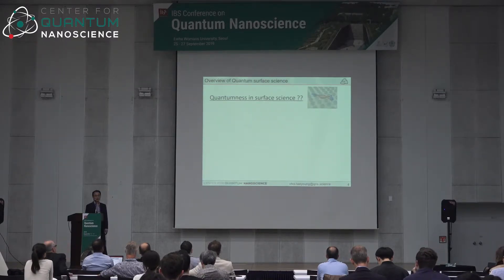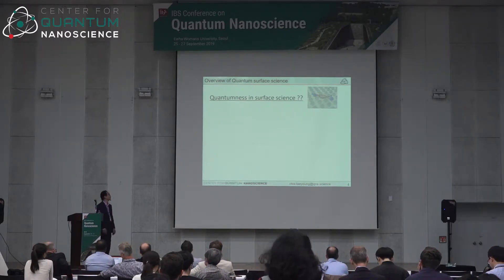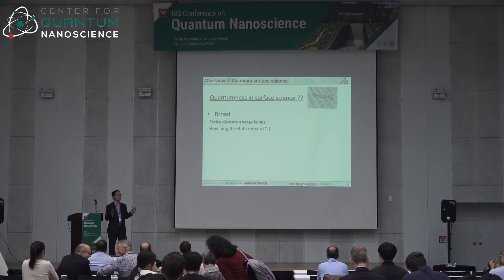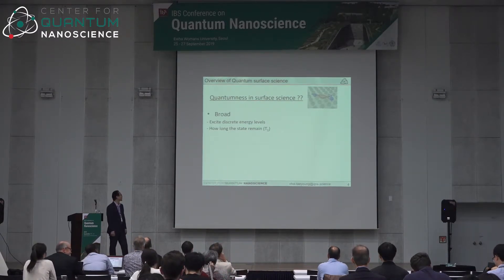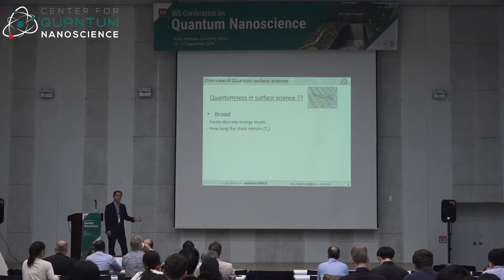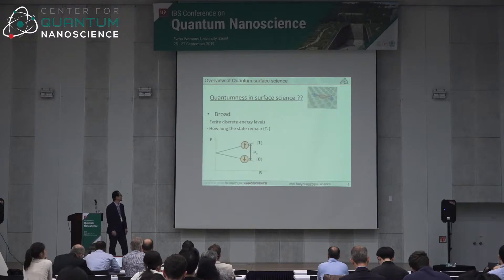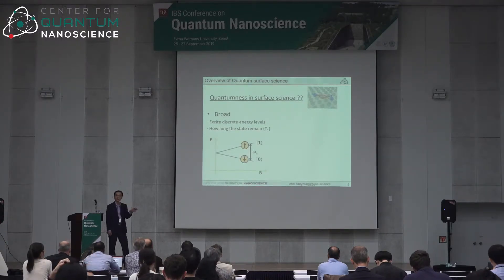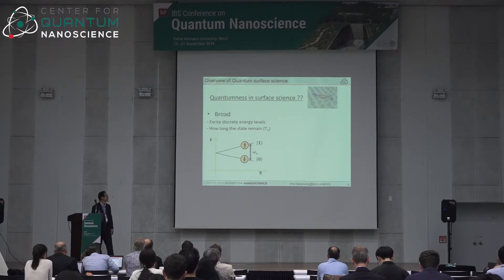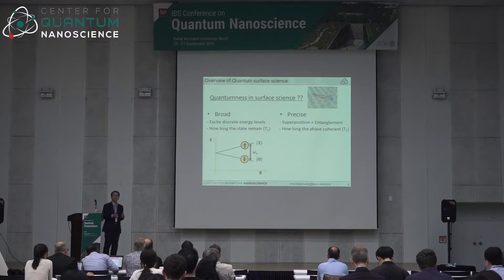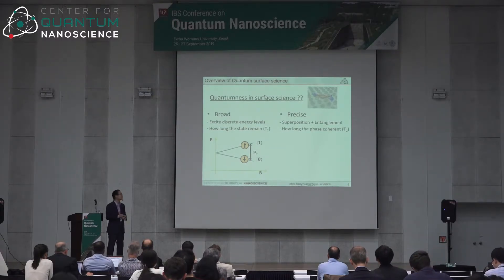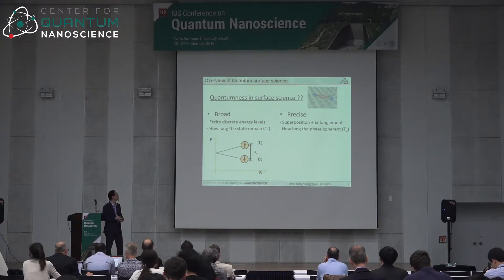So what is quantumness in surface science? There's a lot of discussion about how to define the quantum. Broadly speaking, first you have discrete energy levels, and you can control them — you can excite the discrete levels back and forth. The next question is how long the state can remain: that is T1, the relaxation lifetime. For spin, you apply a magnetic field, you get Zeeman splitting, and you can excite states by tunneling electrons or using X-rays. But a more updated definition of quantumness requires a superposition of quantum states as well as entanglement.